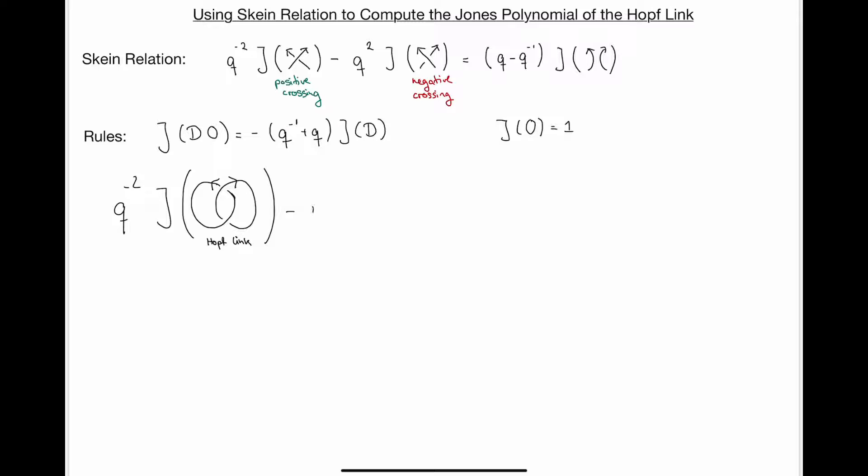And so now we're going to put here the q minus 1 on the front, and then we're going to get q squared times the Jones polynomial. And now I'm going to look at this crossing and make it a negative crossing. So how does that look? Well, now the bottom strand is going to go over the top strand and go around. So I'm going to get a circle here, and for the other one, this other one will go underneath.